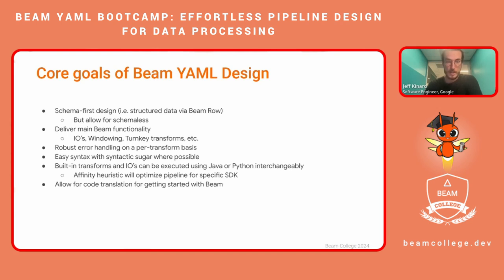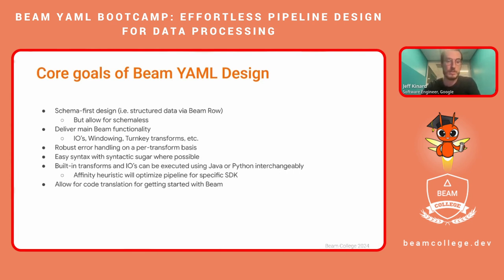The core goals of our design were to be schema first. This means if anyone's familiar with Beam row — essentially a built-in data type for structured data, think just like a row in any generic database. We do want to allow for schema-less as well, so we don't want to lock it down. But any of the turnkey transforms and built-in IOs will leverage this schema structure. We also want to deliver other main Beam functionality: built-in IOs, windowing, turnkey transforms, anything that will make the experience easier.